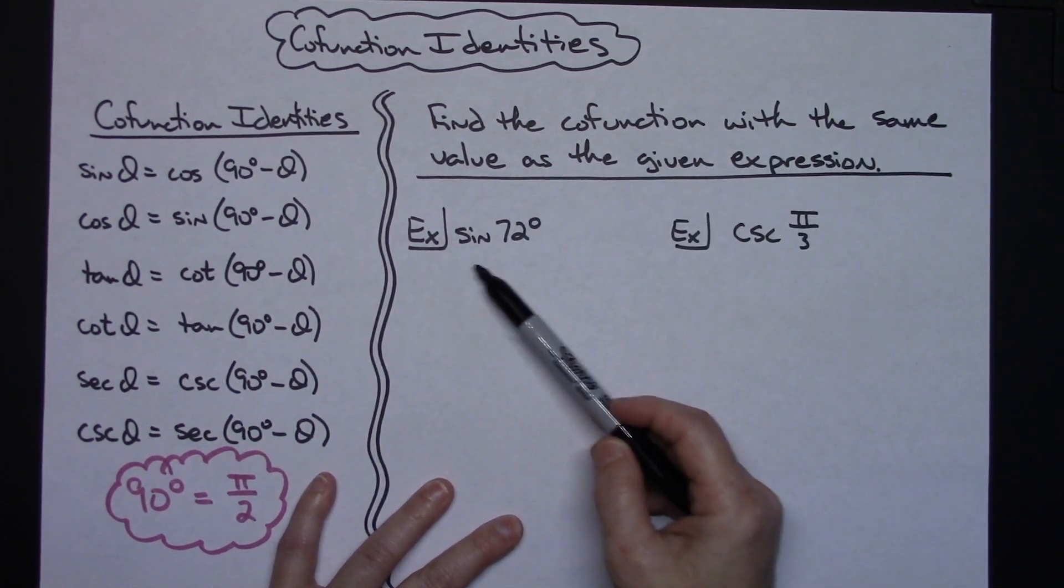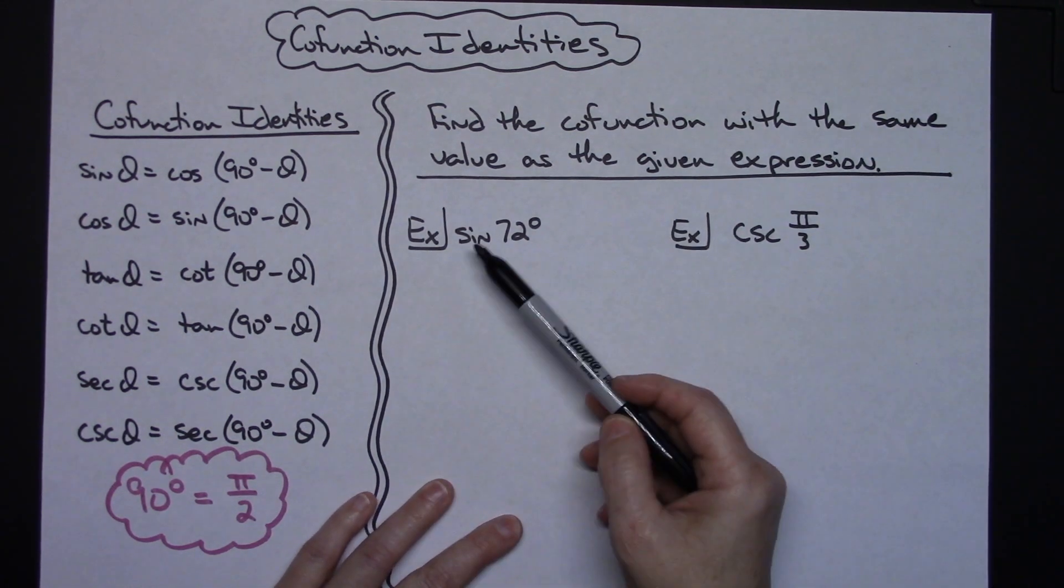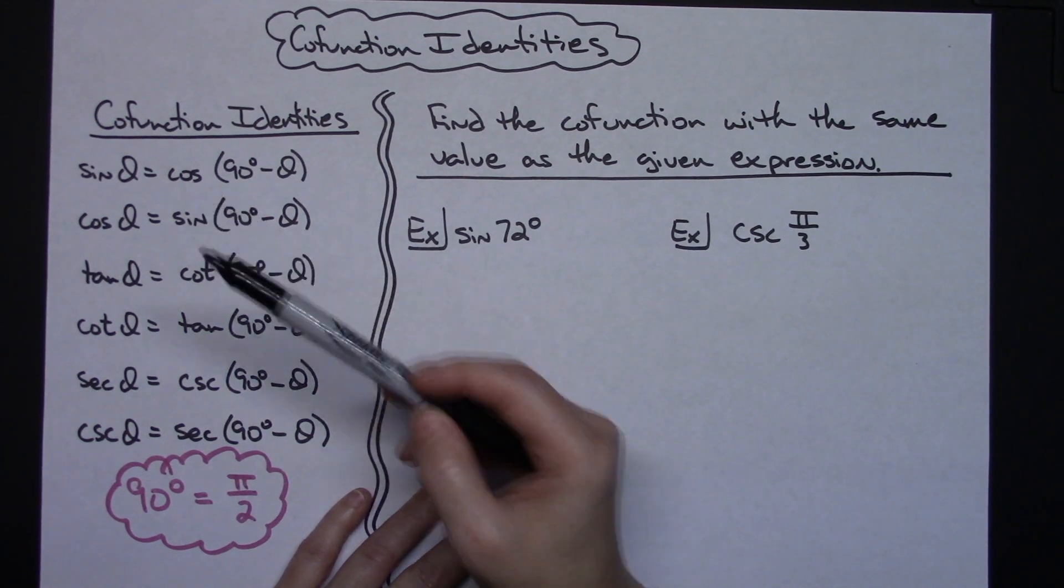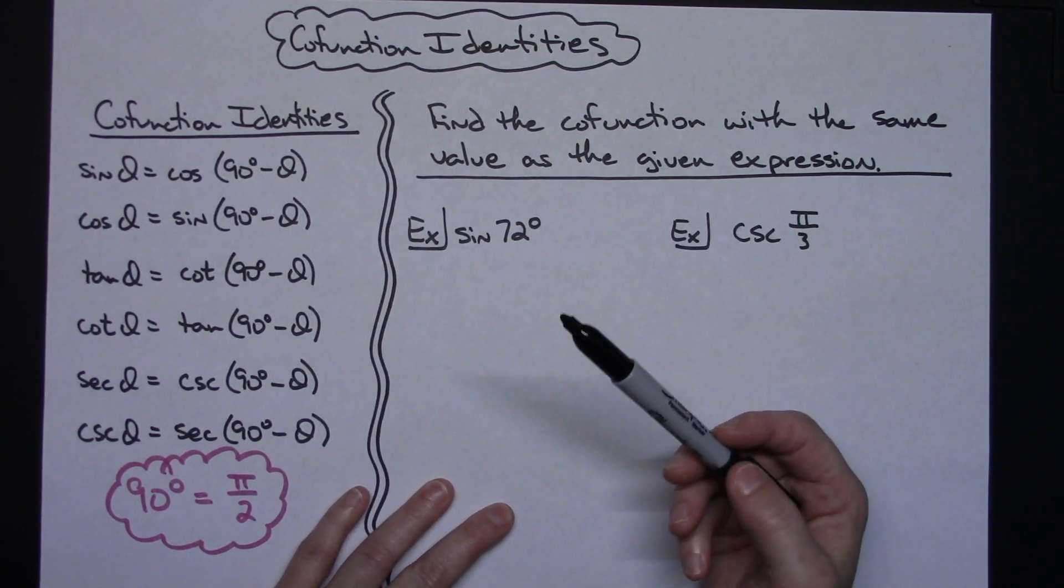So they're giving you an expression either in degrees or radians and they're wanting the cofunction. So if you see sine you know your answer has to be cosine, and the question is it's the cosine of what angle.